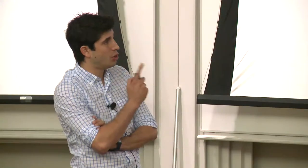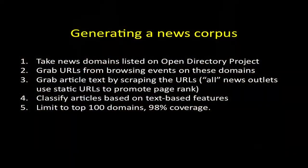We're going to try to generate a news corpus. We'll take news domains listed on a crowd-sourced, human-annotated platform called the Open Directory Project. That gives 45,000 news outlets. We'll take the URLs from browsing events on those domains, get the article text by scraping them, and take advantage of the fact that every decent news outlet uses static URLs so that articles can get page rank and higher search ranking. We'll classify articles based on the text using supervised machine learning, and we'll limit to the top 100 domains, which covers 98% of consumption.